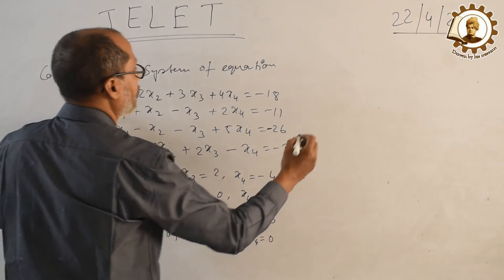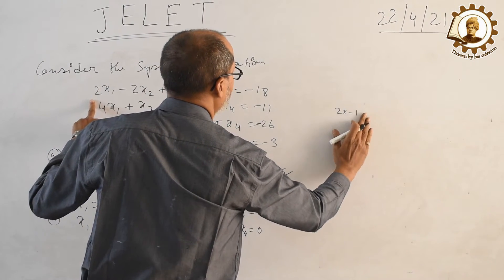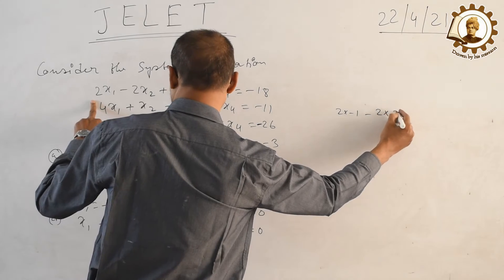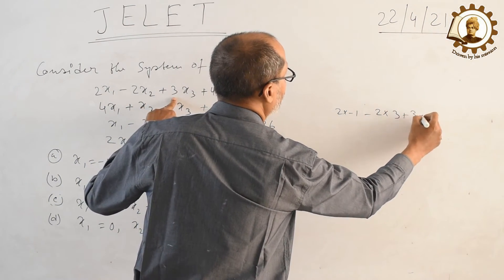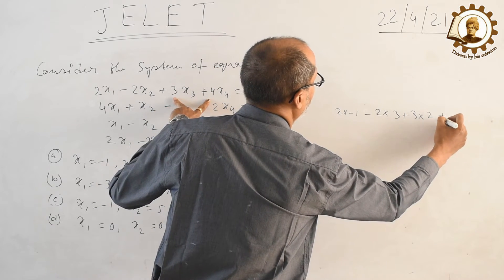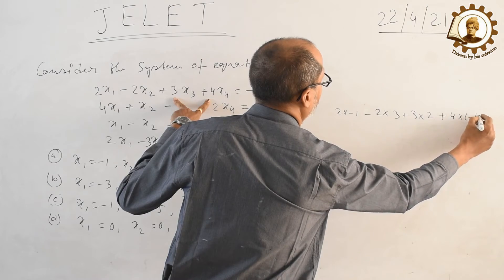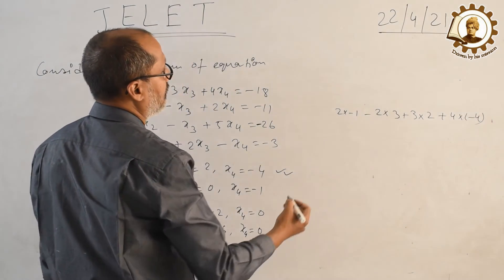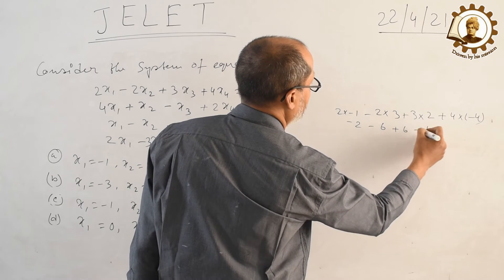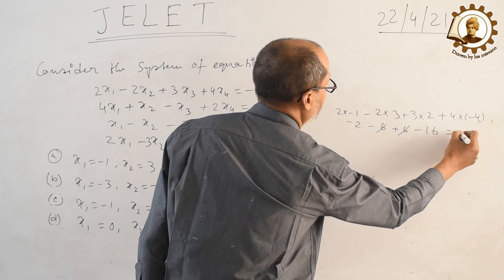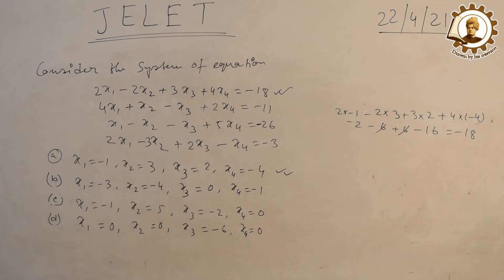So x1 equals minus 1, that means 2 into minus 1 minus 2 into 3, 3 into 2, plus 4 into minus 4. Minus 2 minus 6 plus 6 minus 16 equals minus 18. So here is the answer.